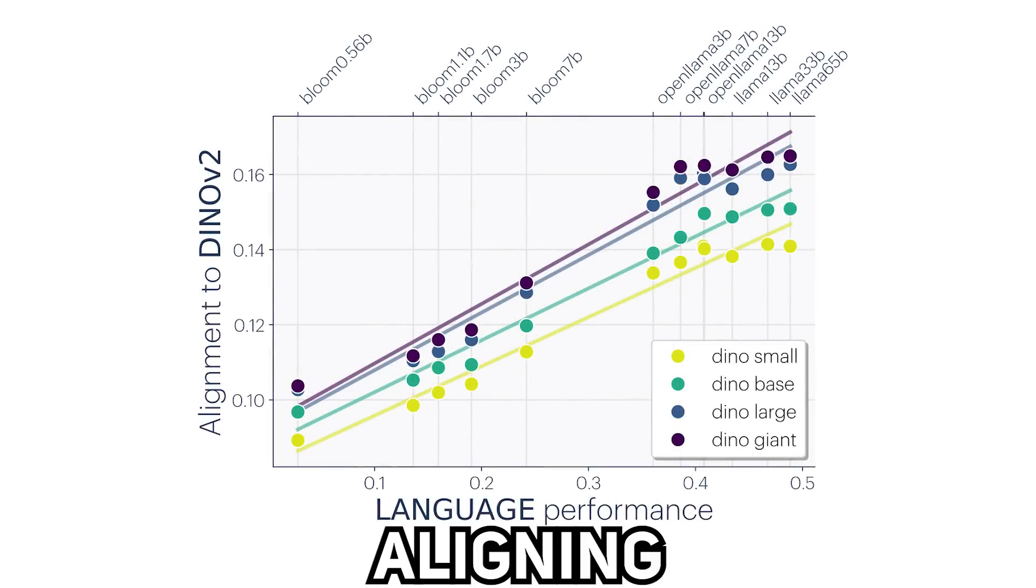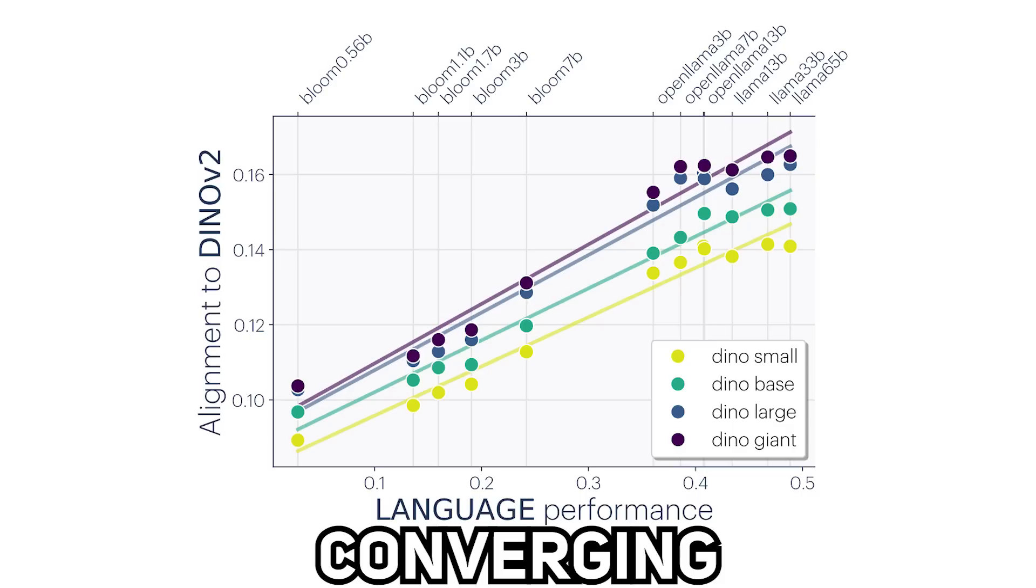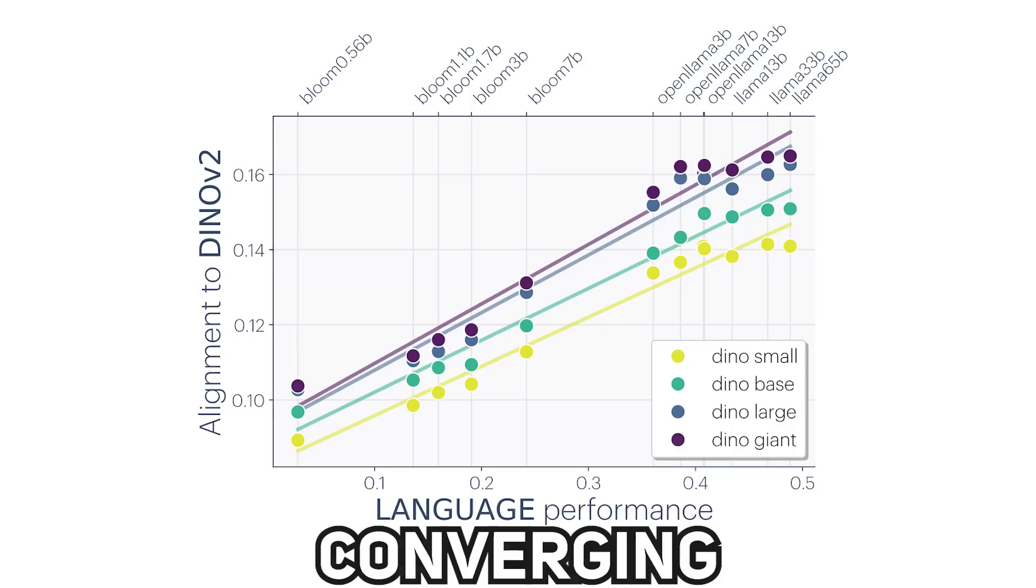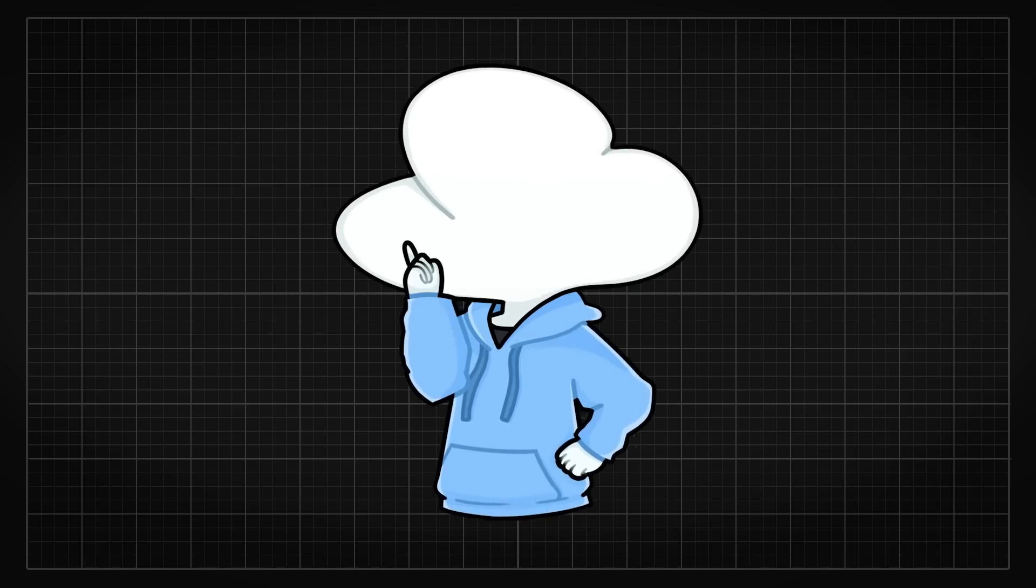The first big question is, why are representations aligning and looking like they are converging? As LLMs get better at language modeling, they have shown in the evidence that the representations it learns are more and more aligned with vision models, and it is also the same the other way around.